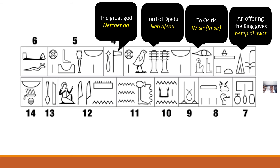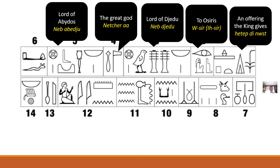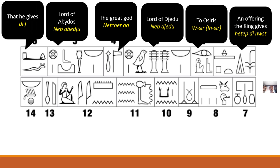The next grouping is 'Netjer-aa,' the great god. This is not just any god — this is 'Netjer-aa,' the great god. The flag symbol here, which probably represented a banner in front of a temple, is our word for 'netjer,' a triliteral. He's also the Lord of Abydos — 'Neb' repeated again, with this spelling out Abydos and the town symbol once more telling us this is a location.